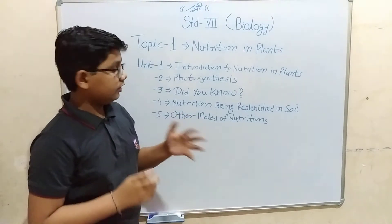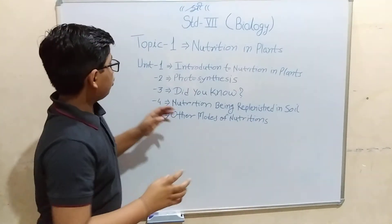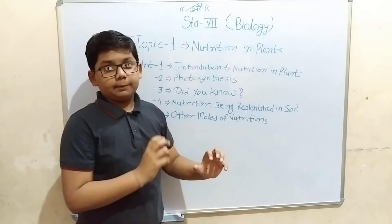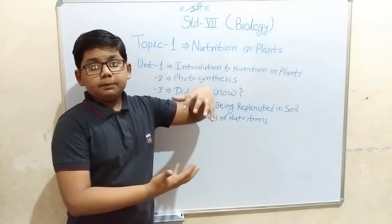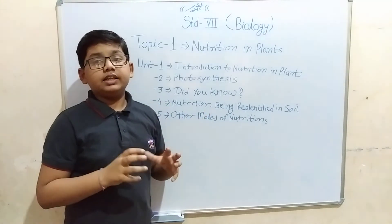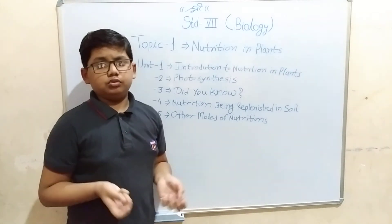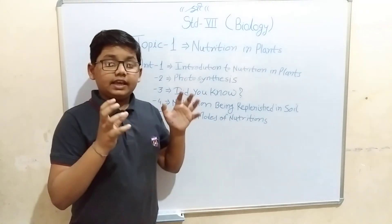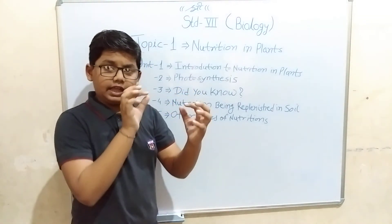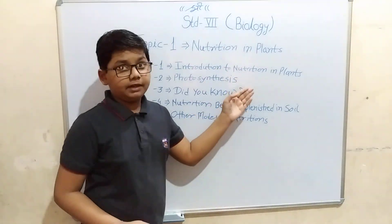Why are some plants green but don't make their own food? We will see that in topic five, which covers other modes of nutrition. There are also plants growing under the ocean — for example, the African plant growing inside water, which has pointed structures called polyps. Some people think they are animals, but they are plants because they contain roots and other plant parts, along with small animal-like creatures called polyps. This concludes our first topic: introduction to nutrition in plants.